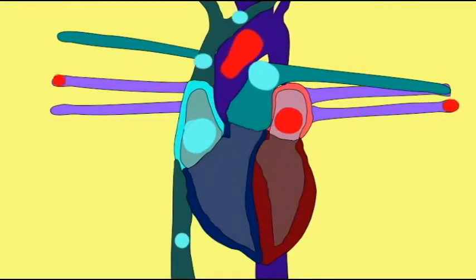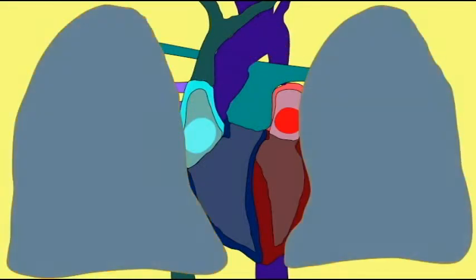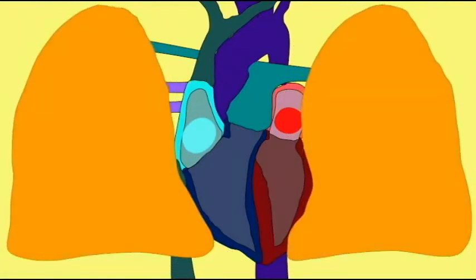The left ventricle, as it contracts, will then squeeze this blood through the aorta where it will go to the tissues of the body, the brain, the muscle, the skin, the liver, etc.